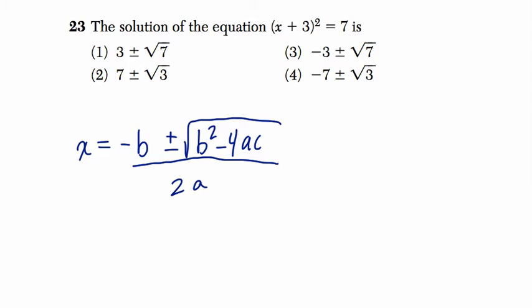So this is just my way of solving it. There are, of course, other ways. But we have x plus 3 squared equals 7. The first thing I do is expand this: x plus 3 times x plus 3 equals 7.